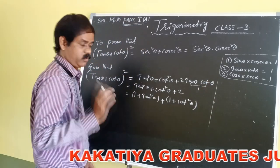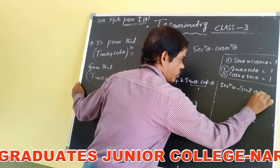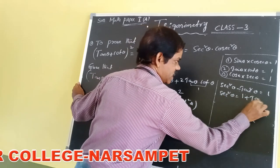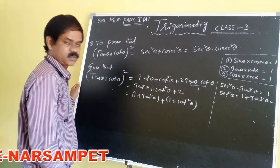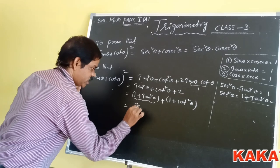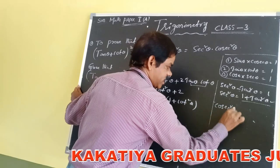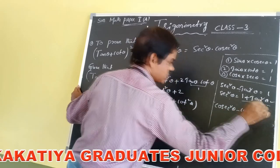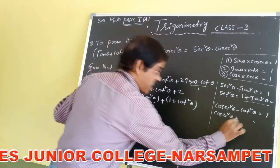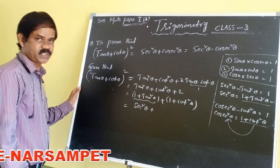According to the Pythagorean identity: sec square theta minus tan square theta is equals to 1. So sec square theta is equals to 1 plus tan square theta. That's why we write 1 plus tan square theta as sec square theta. Next, cosec square theta minus cot square theta is equals to 1. From this, cosec square theta is equals to 1 plus cot square theta. So we write 1 plus cot square theta as cosec square theta.